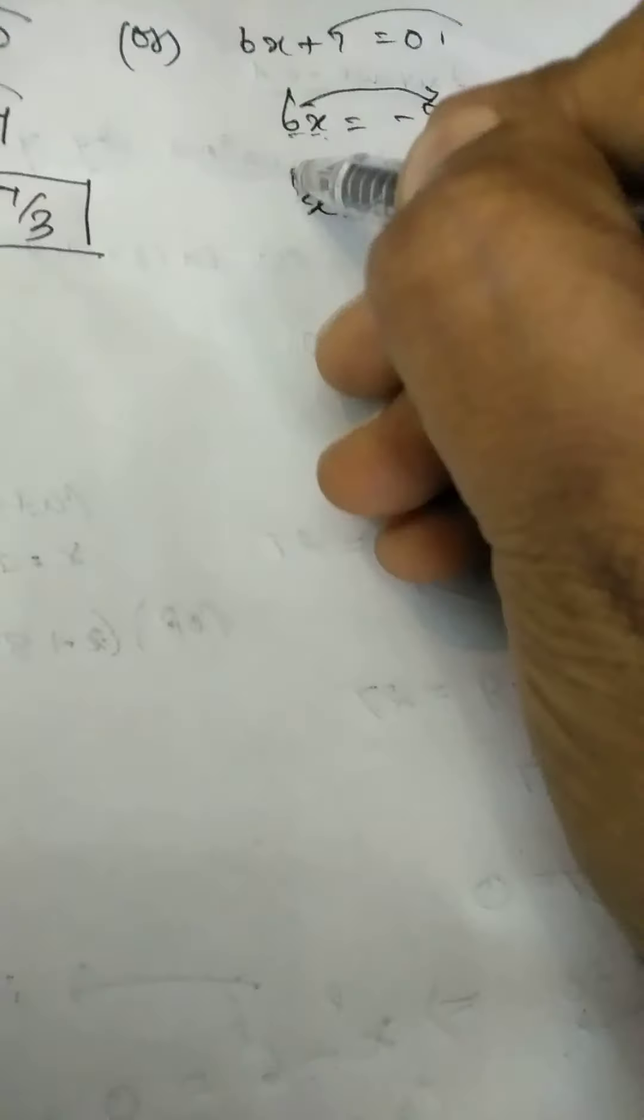It is along with x it is in the form of product. So the product number will change into division. So this is your another root. So we have two numbers now.